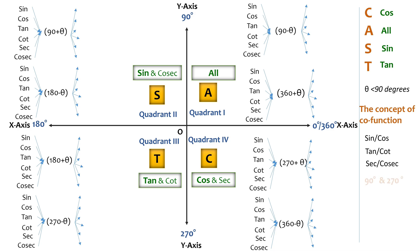The second thing concerns the angles 90° and 270°: whenever we are dealing with 90° or 270°, the function changes to its co-function. The function does not change when we are dealing with 180° or 360°. Let's now move on to solutions — let's give sin(90+θ) a try.